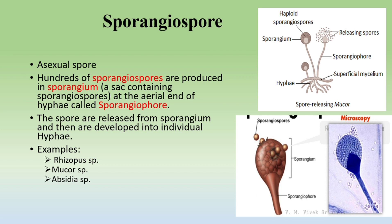Sporangiospores are a kind of asexual spore. As seen in the diagram, these spores are produced in a sac-like structure known as the sporangium, which is attached to a stalk. Hundreds of sporangiospores are produced in a sporangium located at the aerial end of the hyphae. The spores burst out of the sporangium, and each spore develops into an individual hyphae forming a new fungus. Examples of fungi producing sporangiospores are Rhizopus and Absidia species.